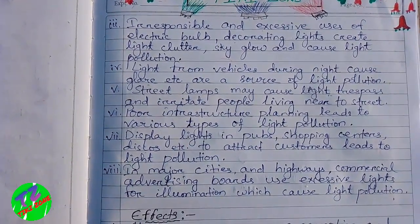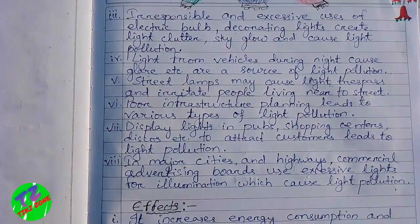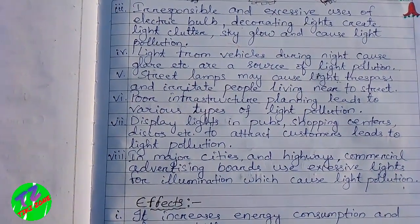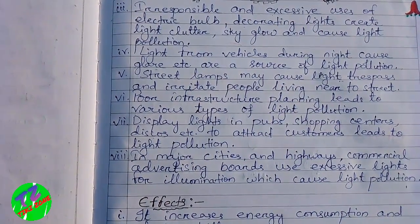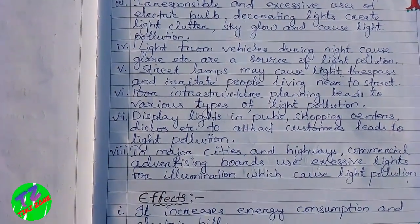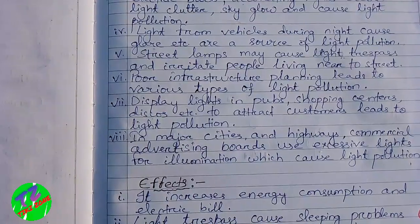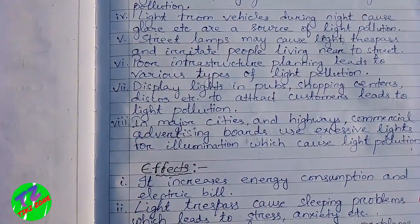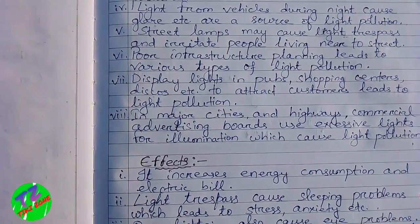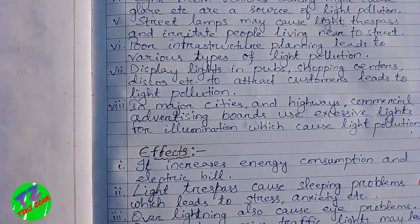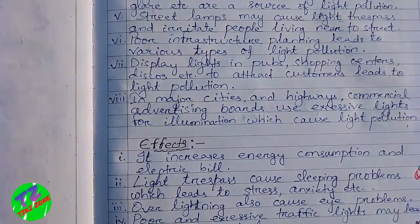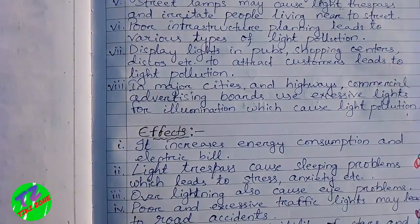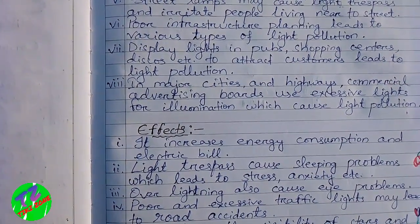Street lamps may cause light trespass and irritate people living near the street. Poor infrastructure planning leads to various types of light pollution. Display lights in pubs, shopping centers, discos, etc. to attract customers lead to light pollution. In major cities and highways, commercial advertising boards use excessive lights for illumination, which are also a cause of light pollution.